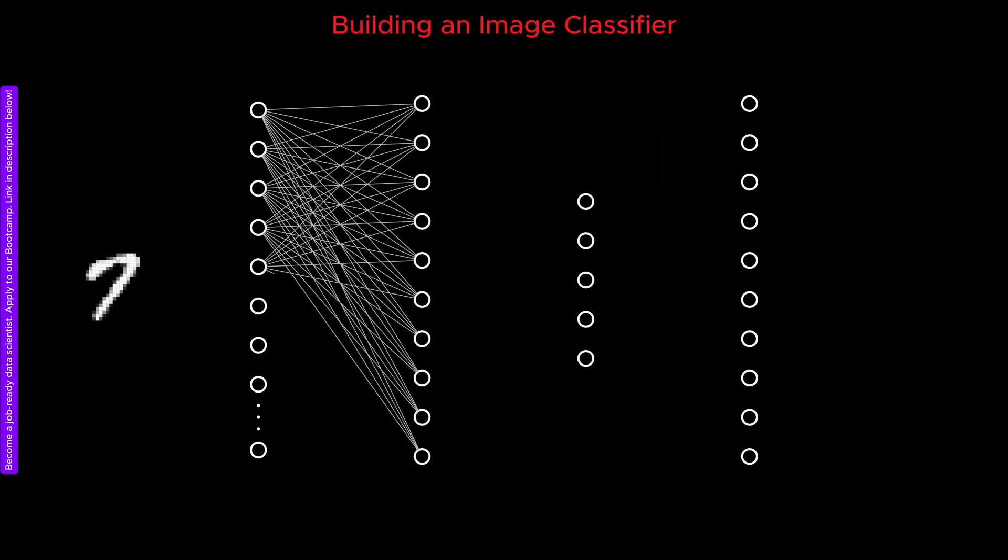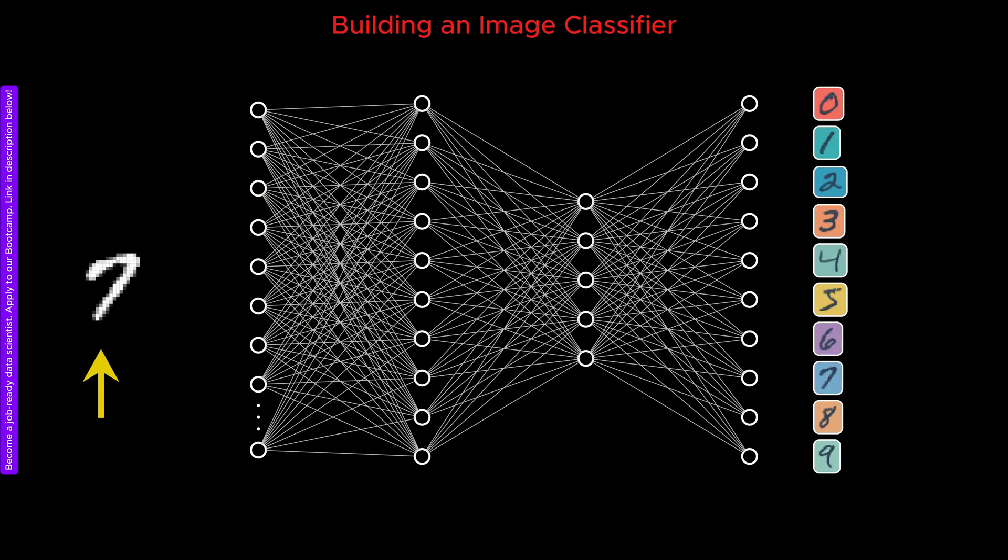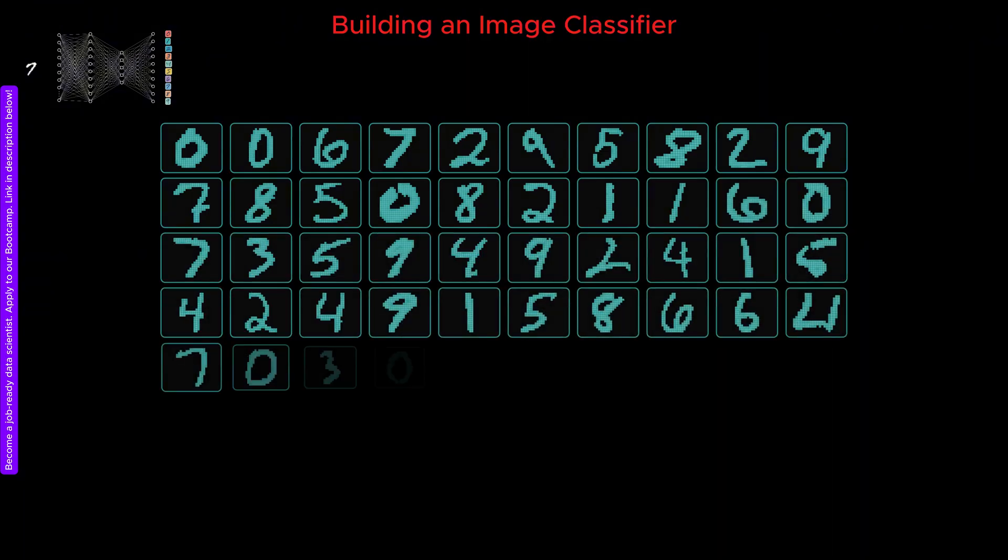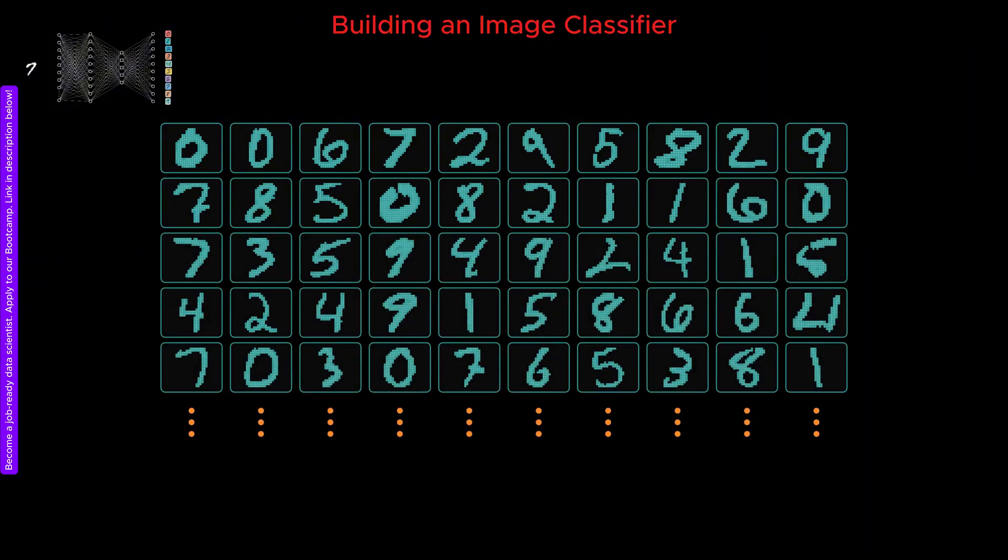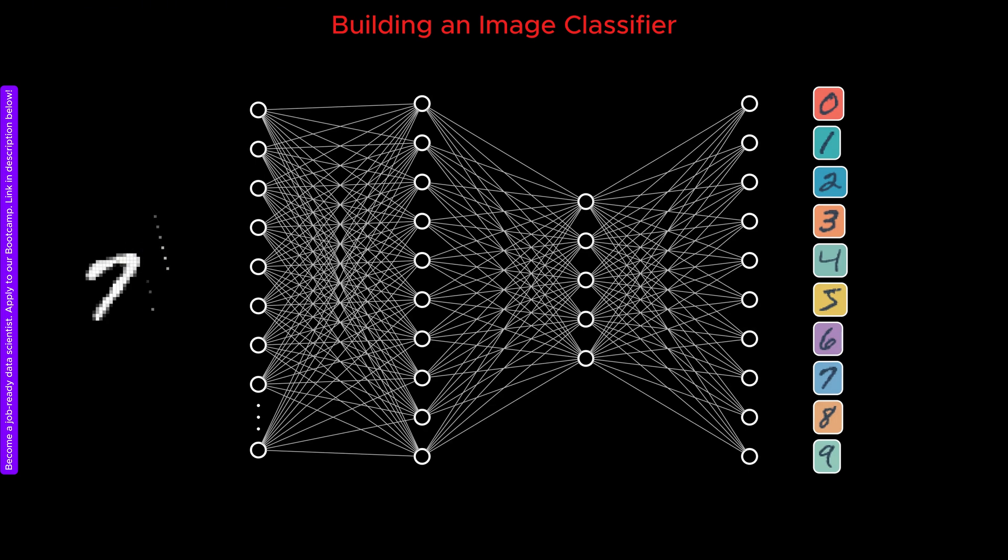We want to use a fully connected neural network to classify handwritten images of digits from 0 to 9. For this task, we use the MNIST dataset, which consists of thousands of digits written by different individuals. Each image in the MNIST dataset is 28 by 28 pixels. Each pixel is used as the input to one neuron in the input layer, which means the input layer has 784 neurons.